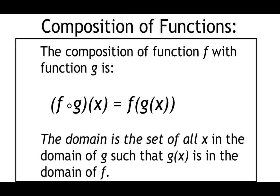The next operation is called composition of functions. We show composition with a little circle, and we read it as f composed with g of x. What that means is we take our function f(x) and replace all of the x information in that original function with whatever we have for g(x) — we're plugging one function into another. Later on we'll also look at domain for these composite functions.